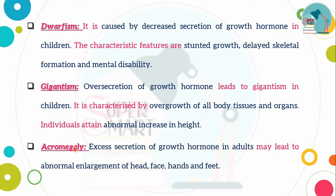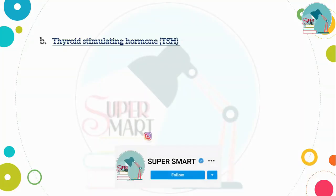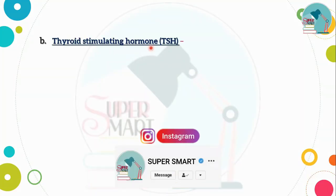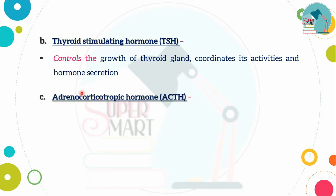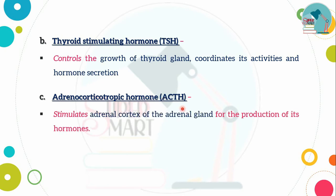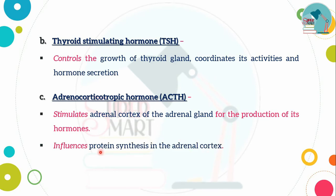Acromegaly occurs in adults when growth hormone is oversecretion, causing enlargement of the head, face, and feet. Next is thyroid stimulating hormone (TSH), which stimulates thyroid gland growth and hormone secretion. Then there is adrenocorticotropic hormone (ACTH), which stimulates the adrenal cortex to synthesize and secrete hormones.